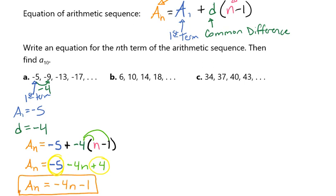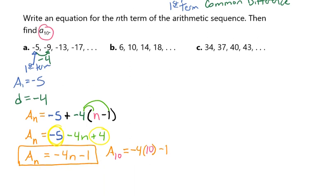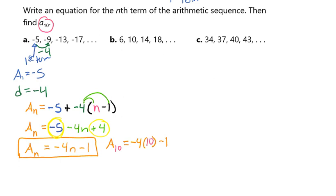Now if I want to be able to find the tenth term, that means that I want to know what is a sub 10. So that means I'm going to move my little n here, and I am going to, in the n spot, put the number 10. Let's go ahead and give ourselves some more room and we're going to work that out. So when we plug that into our calculator, we're going to get that our tenth term is going to equal a negative 41. And that's going to be our second answer.